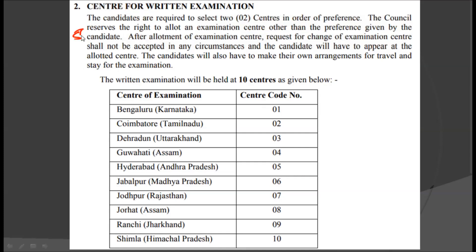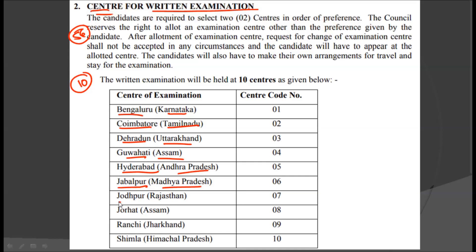For all these 54 posts, there are various centers allotted for the written examination. There are total 10 centers: Bengaluru in Karnataka, Coimbatore in Tamil Nadu, Dehradun in Uttarakhand, Guwahati in Assam, Hyderabad in Andhra Pradesh, Jabalpur in Madhya Pradesh, Jodhpur in Rajasthan, Jorhat in Assam, Ranchi in Jharkhand, and Shimla in Himachal Pradesh. Out of these 10 examination centers, you have to select any two centers, giving preference for a first center and a second center, and you will get the one center which is close to your locality.